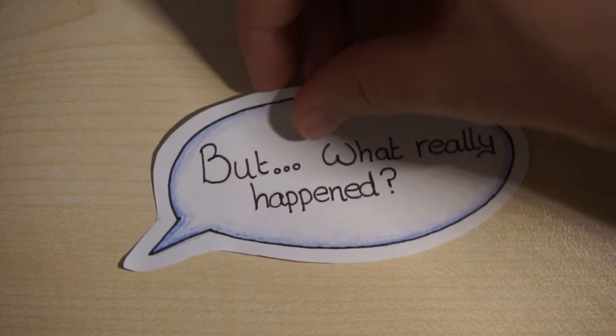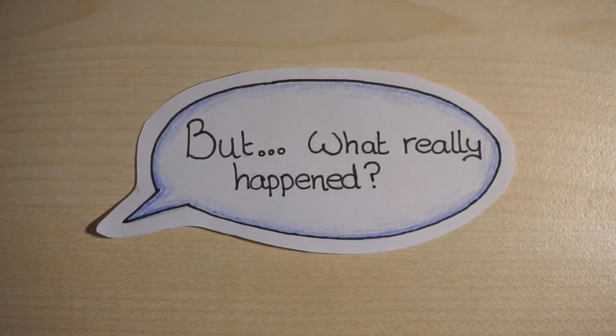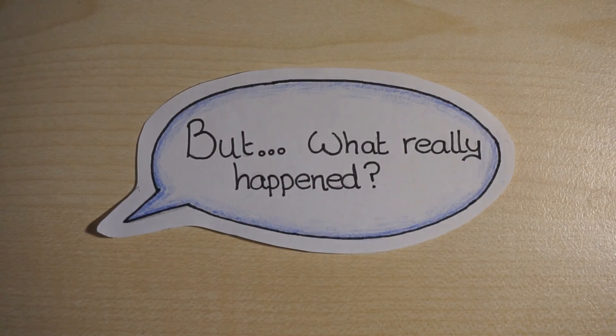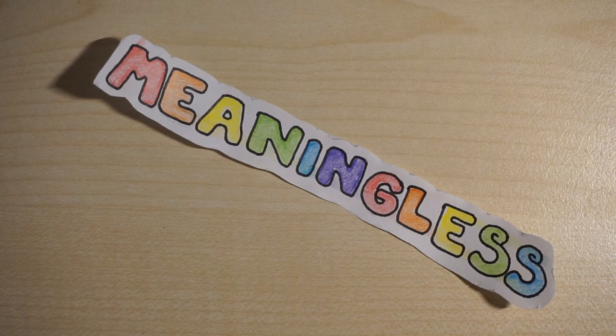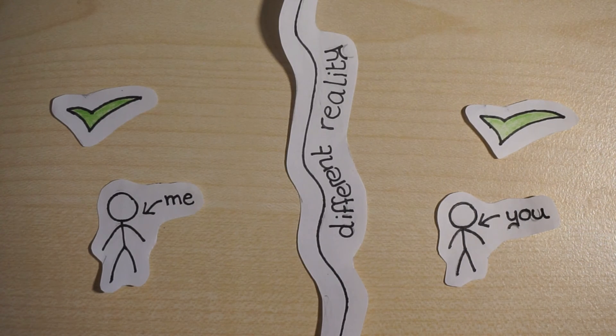But what really happened? This question is meaningless — it makes no sense. Given Einstein's postulates, there must be a different reality in each frame. How cool is that?